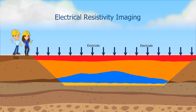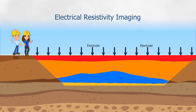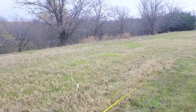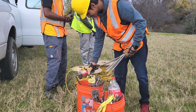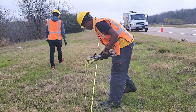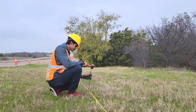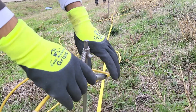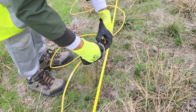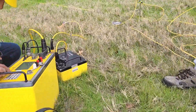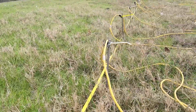It sounds very impressive. There is a lot of things going on beneath the ground. It must be very difficult to do that in the field, no? Actually, it is very easy. First, we determine the line along which we want to get the resistivity image. Next, we insert the metal pegs into the ground at equal distances along the line. The electrodes are attached to the metal pegs with the help of a wire, which is connected to the switch box at one end.